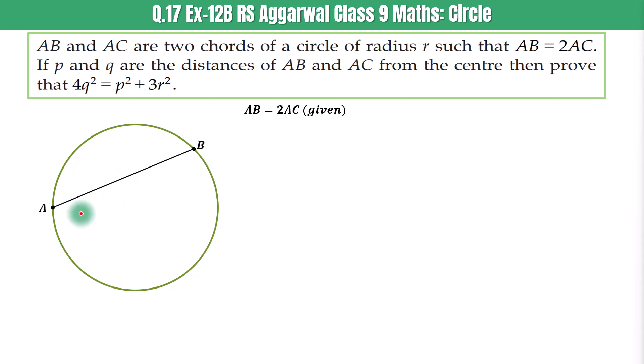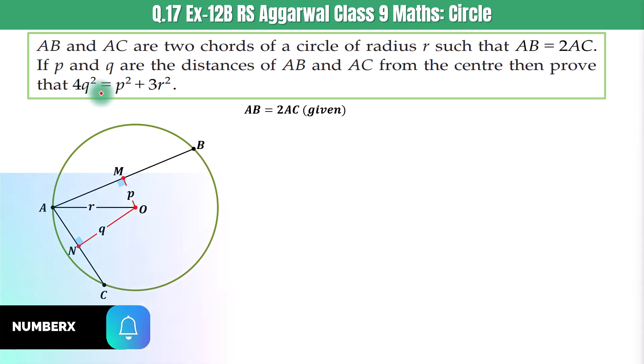Question hai, if AB and AC are two chords of a circle of radius R such that AB is equal to two times AC. Also, if P and Q are distances of AB and AC from center, then we have to prove that 4Q squared is equal to P squared plus 3R squared.